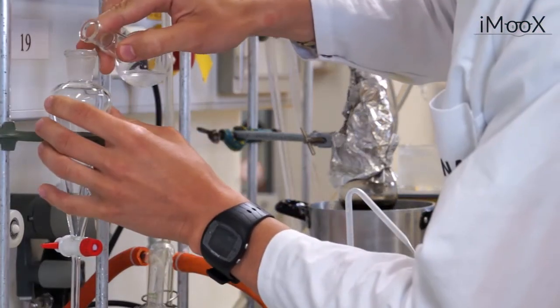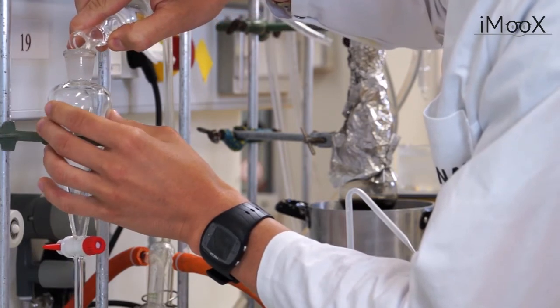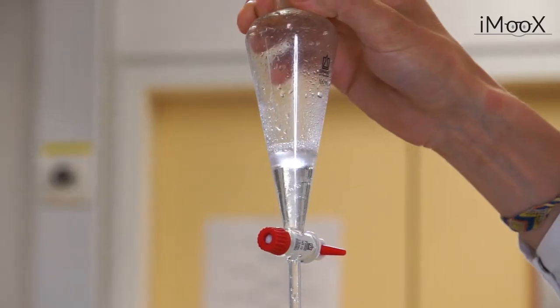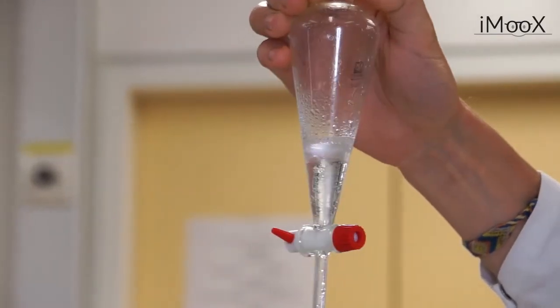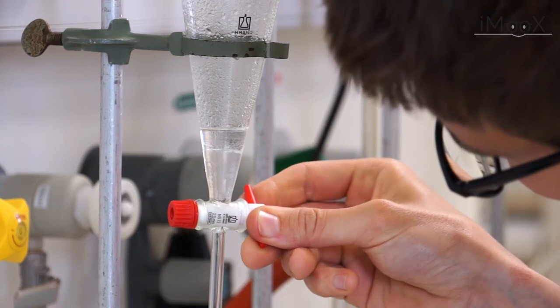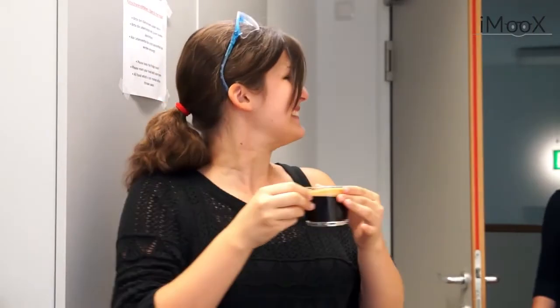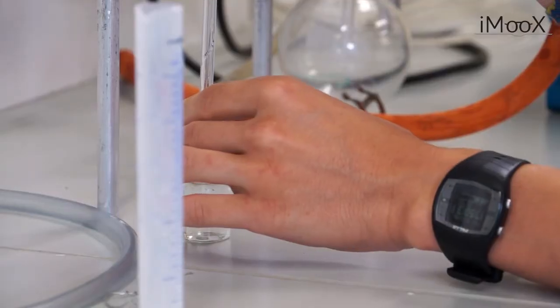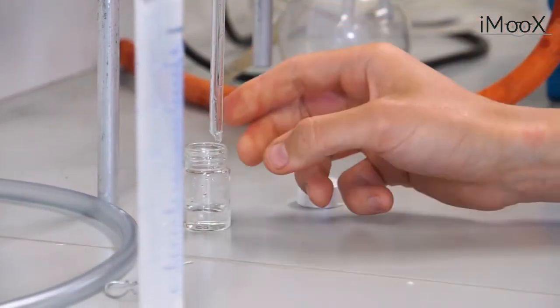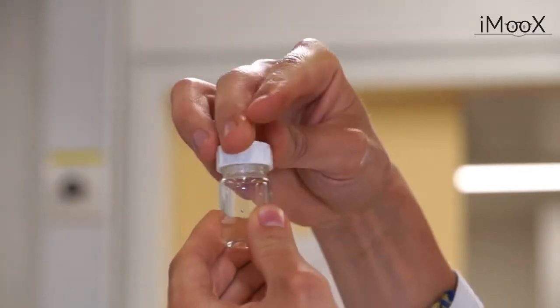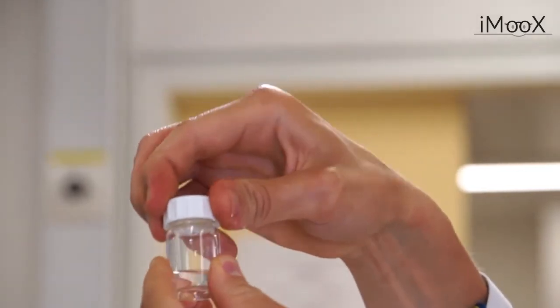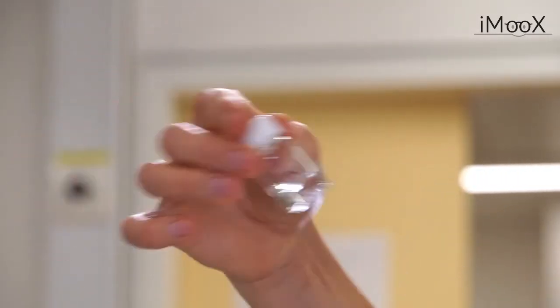Chris transfers the distillate into a separatory funnel and extracts the ester. A phase separation occurs where the ester, due to its lower density, forms the upper phase, whereas the aquatic phase remains at the bottom. Now that you have transferred everything into the vial, you should seal it. You could use some parafilm and tin foil to decorate it nicely.